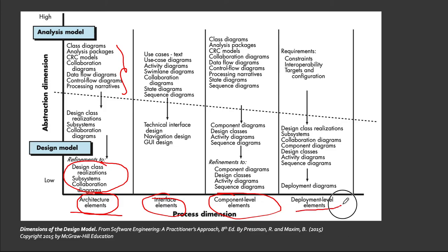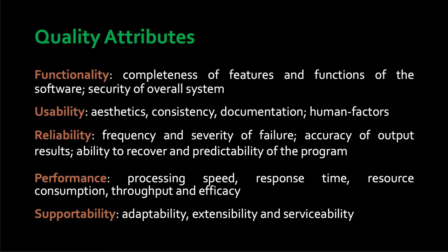The deployment level design will have to wait until substantial design elements from the three previous processes are already being produced. The deployment level design will not start if the three designs before it are not yet completed. While doing the design, it is best to already introduce quality in the outputs, as these will translate to overall software quality later on.